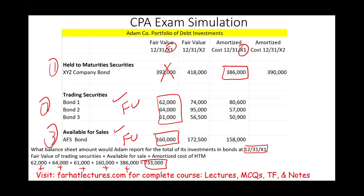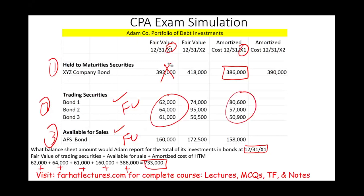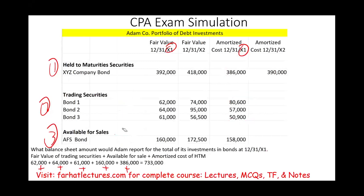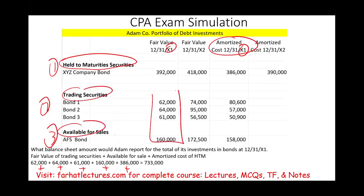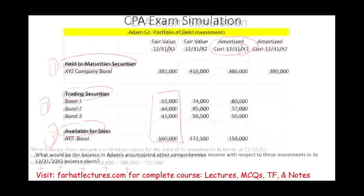Another common mistake: rather than using the fair value for trading securities, some students might use cost, or they might use fair value for held-to-maturity. You have to be careful that held-to-maturity bonds are reported at amortized cost, while trading securities and available-for-sale bonds are reported at fair value.